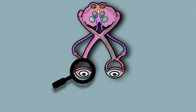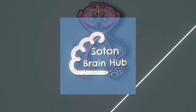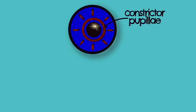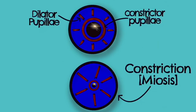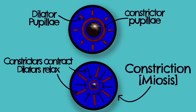There are two muscles found in the iris that control the diameter of the pupil: the constrictor or sphincter pupillae and the dilator pupillae. The constrictor pupillae has a circular arrangement in the iris and is innervated by the parasympathetic nervous system to constrict the pupils. In contrast, the dilator pupillae runs radially in the iris and is innervated by the sympathetic nervous system to dilate the pupil.